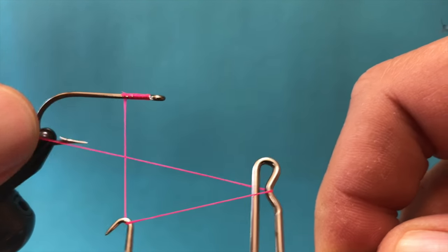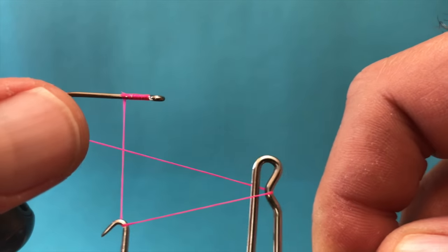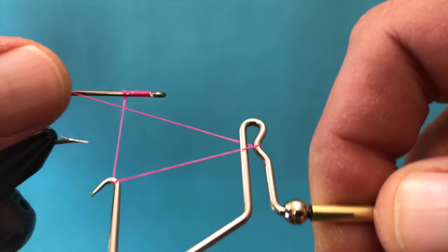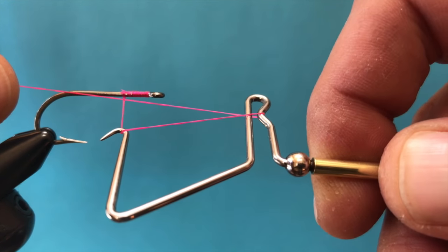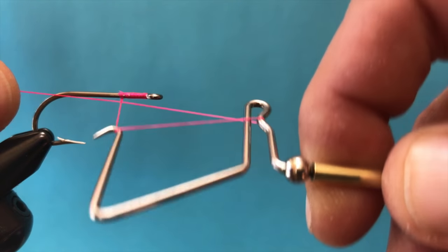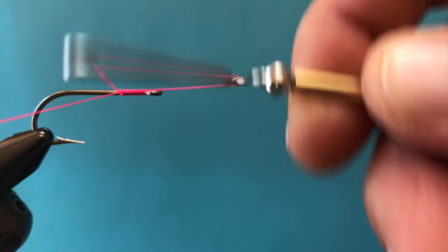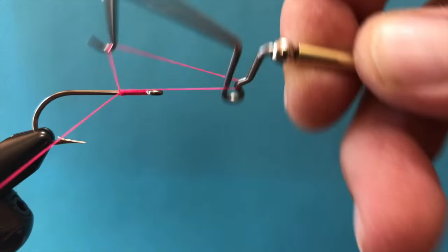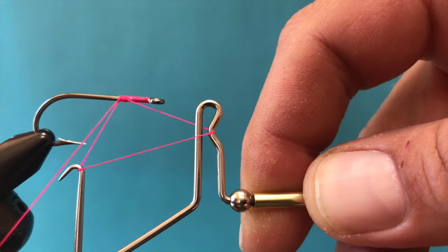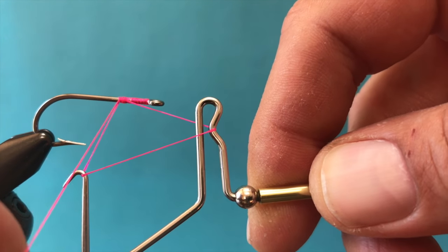Now, all you have to do is you're going to pull this end of the thread, keeping tension on it. Pull it so that everything slides up right to the base of the hook shank. And start winding away from you. One, two, three, four times. You can do it four or five times. I find four is usually enough.